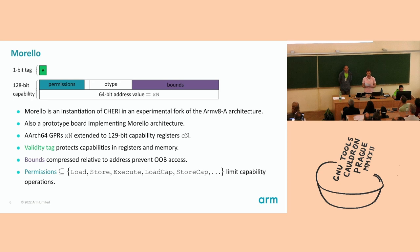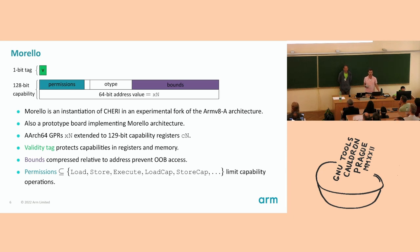The tag memory itself is not directly addressable — it can only be accessed indirectly through capability loads and stores. The validity tag is preserved only by valid capability operations. Invalid operations on a capability cause the tag to be cleared, and once cleared, the capability can no longer be dereferenced. For example, overwriting a capability in memory with a non-capability store or taking a capability sufficiently far out of bounds would invalidate it. Capability bounds encode a base and limit relative to the address, which allows out-of-bounds accesses to be trapped in hardware. Permissions limit which operations a given capability can be used for, such as load, store, and instruction fetch.